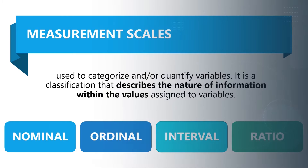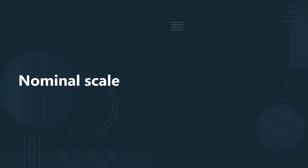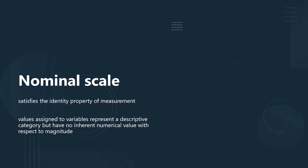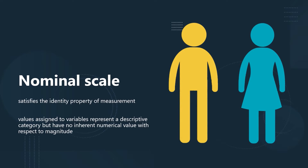The first and lowest level of measurement is the nominal scale. The nominal scale of measurement only satisfies the identity property of measurement. Values assigned to variables represent a descriptive category but have no inherent numerical value with respect to magnitude. For example, sex is classified on the nominal scale since it has either male or female as its data. Neither of the two is higher or lower than the other — male is not superior or higher than female, or the other way around.